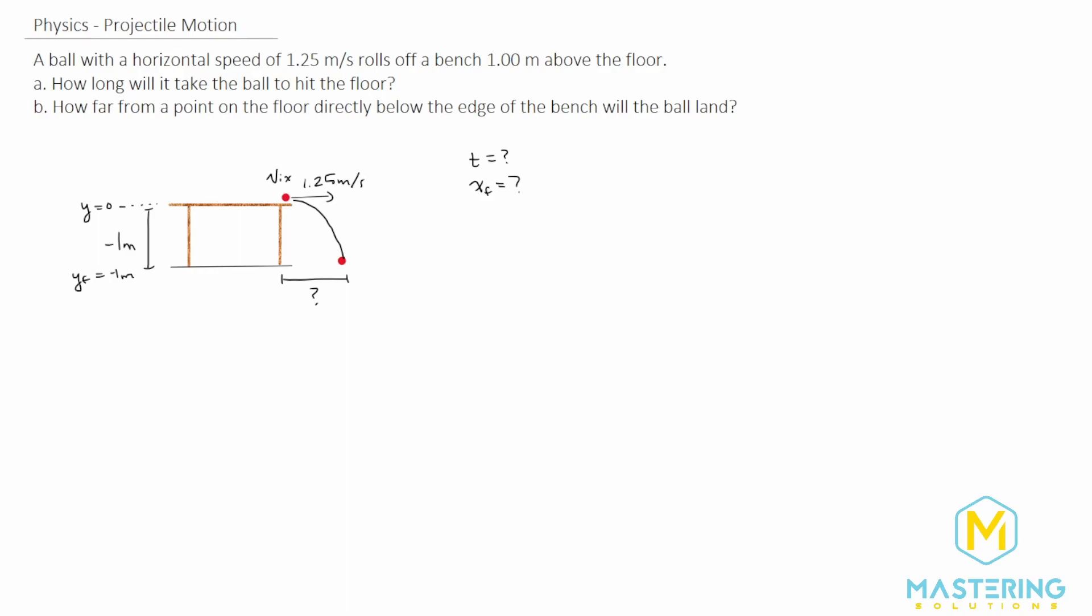To find the time, what we're going to use is a kinematic equation of y final is equal to y initial plus the initial velocity in the y direction times time, plus 1 half the acceleration times the time squared. This is all in the y direction, so the initial velocity in the y direction is actually 0.